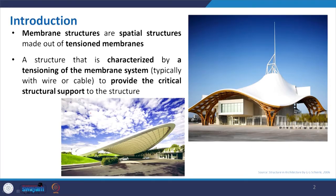At the introduction: what exactly is the membrane structure? It is a spatial structure which is made out of tensioned members. Membrane structure or fabric structure is one kind of tensile structure. The components are the membrane or fabric, and the structural support, which may be a mast, a cable, or a rope. Alternatively, it is a structure characterized by tensioning the membrane system, typically with wire or cable, to provide the critical shape or structural support.